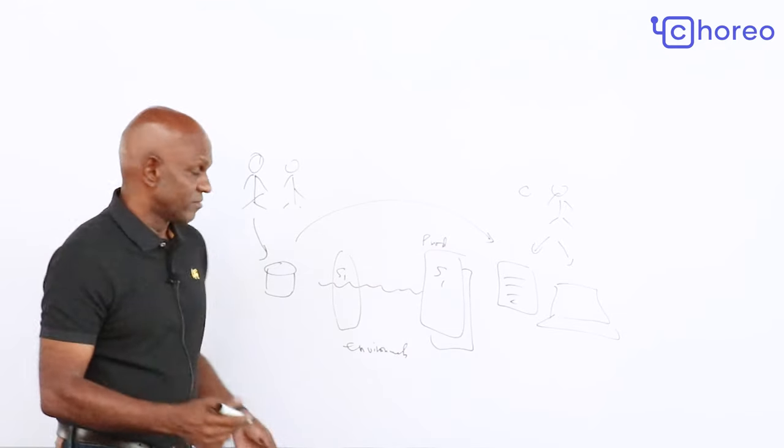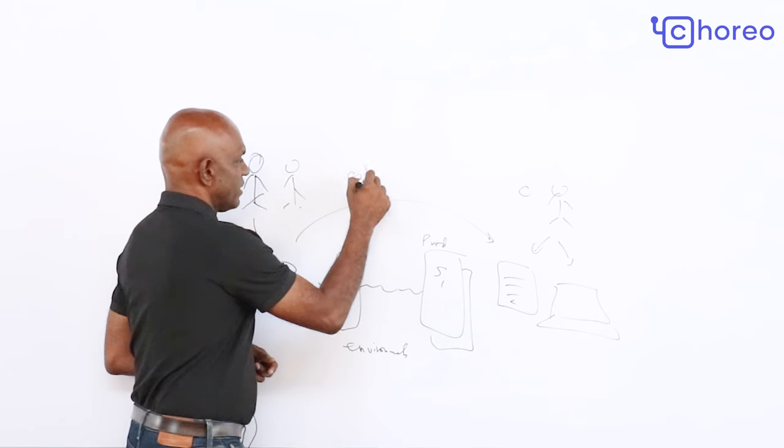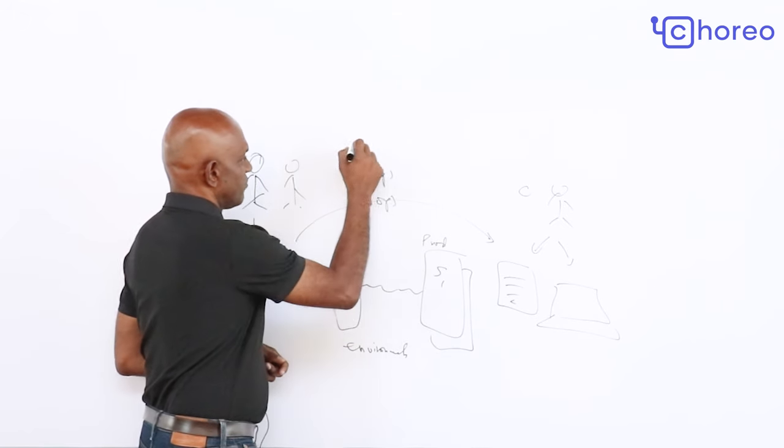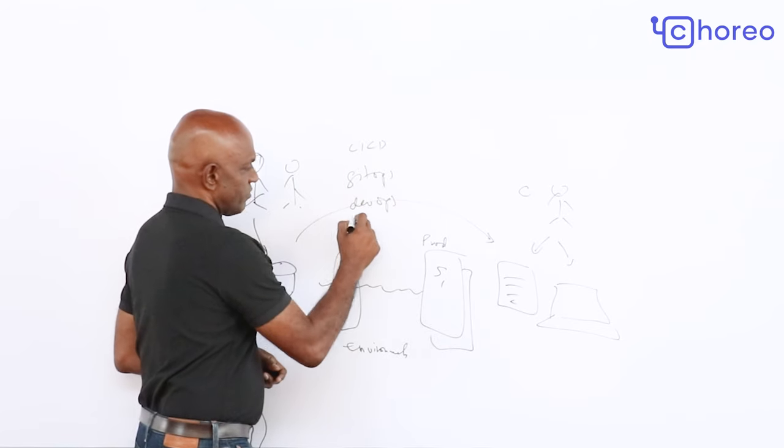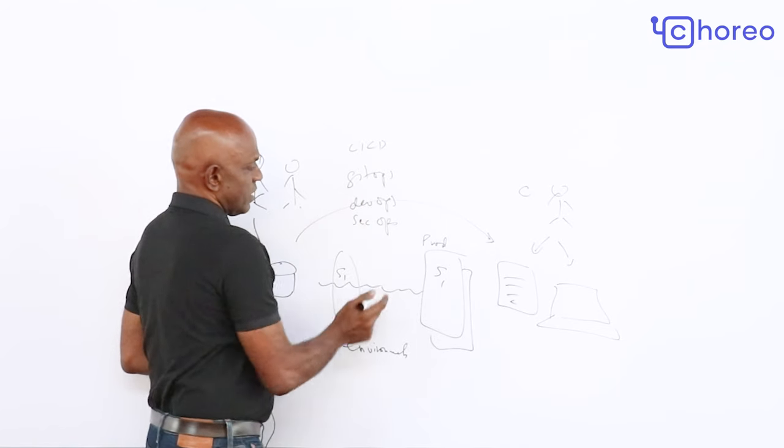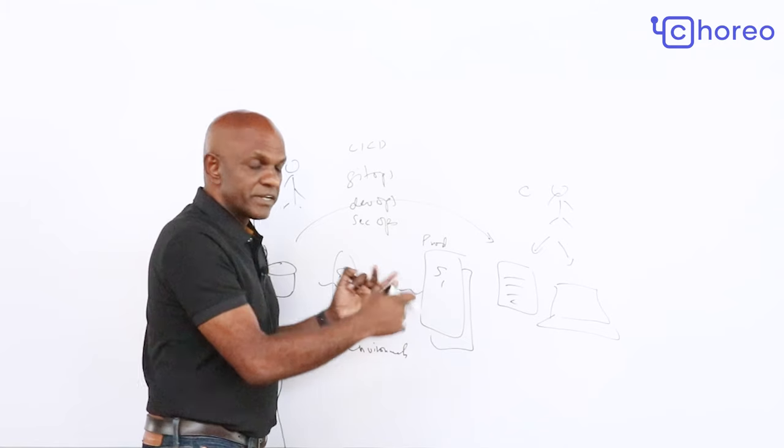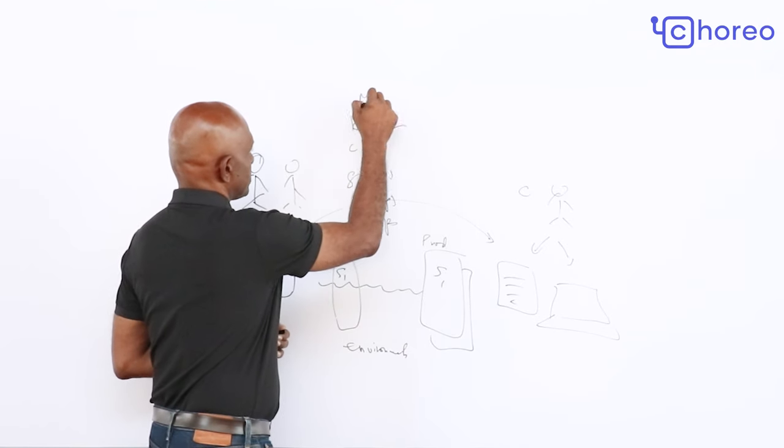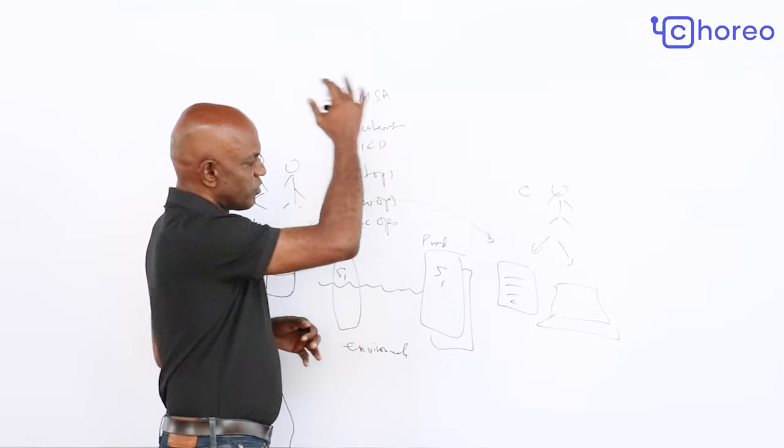This involves lots of buzzwords today: GitOps, DevOps, CI/CD, SecOps. If you're doing any modern architecture, it'll involve Kubernetes, might involve microservices architecture, and so on.